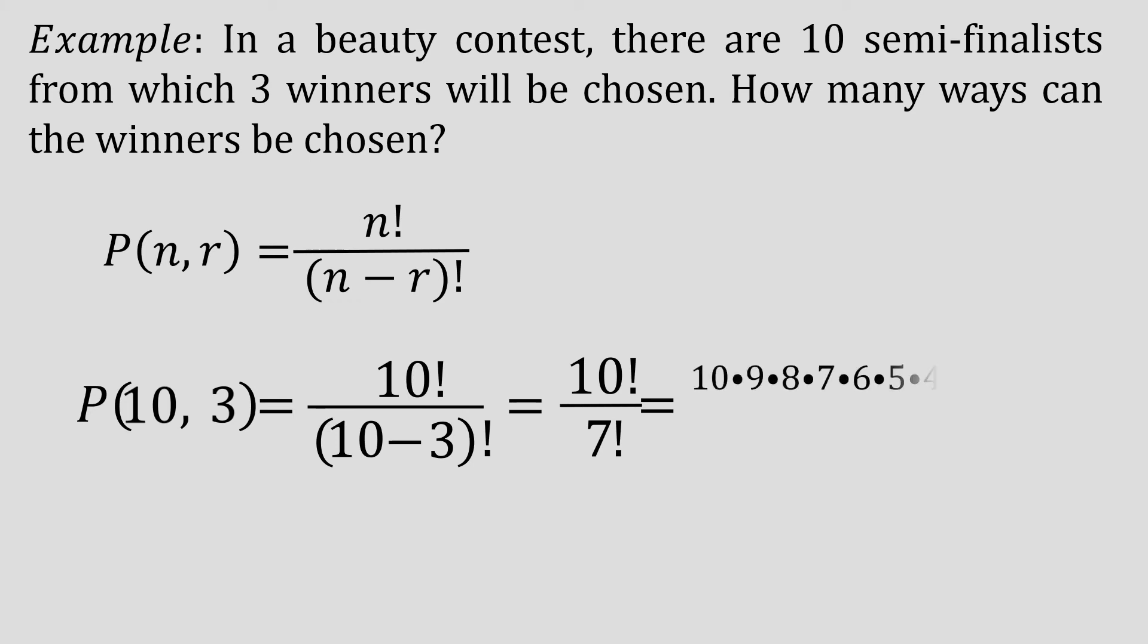And we have 10 factorial is equal to 10 times 9 times 8 up to 1, and that's just equivalent to 3,628,800 divided by 7 factorial, which is 7 times 6 times 5 up to 1, and that is equal to 5,040.